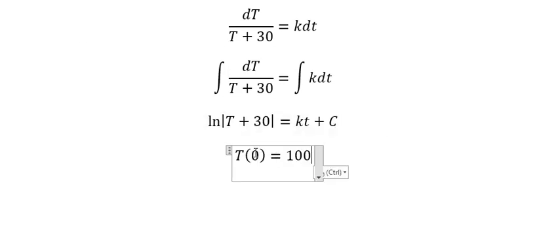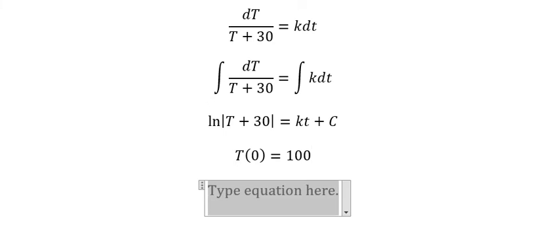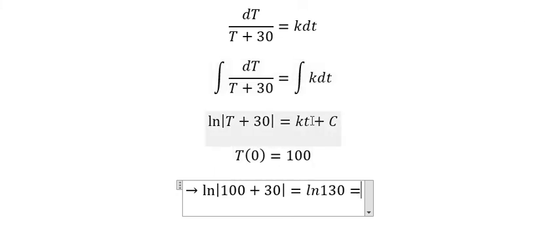That means when small t equals to number 0, capital T equals 100. So we will get ln of 100 plus 30 equals to ln 130, because t equals to number 0, so you get C.